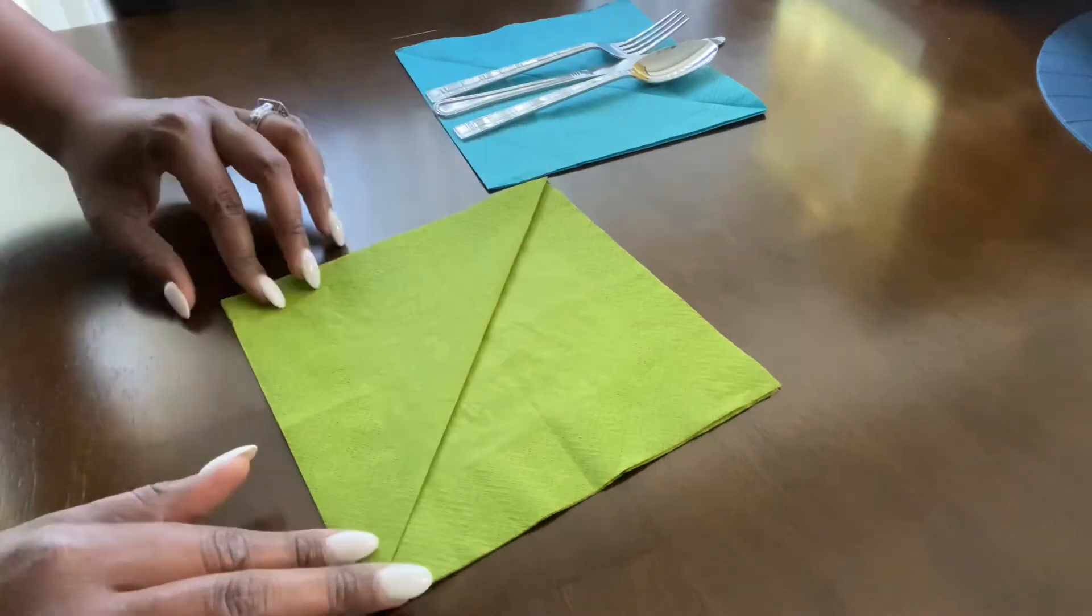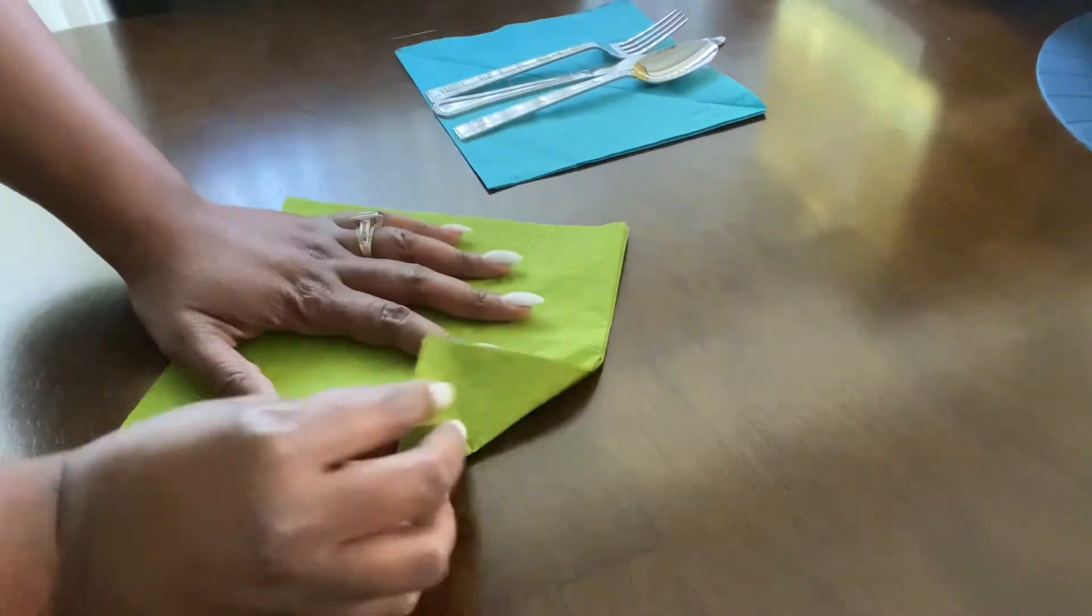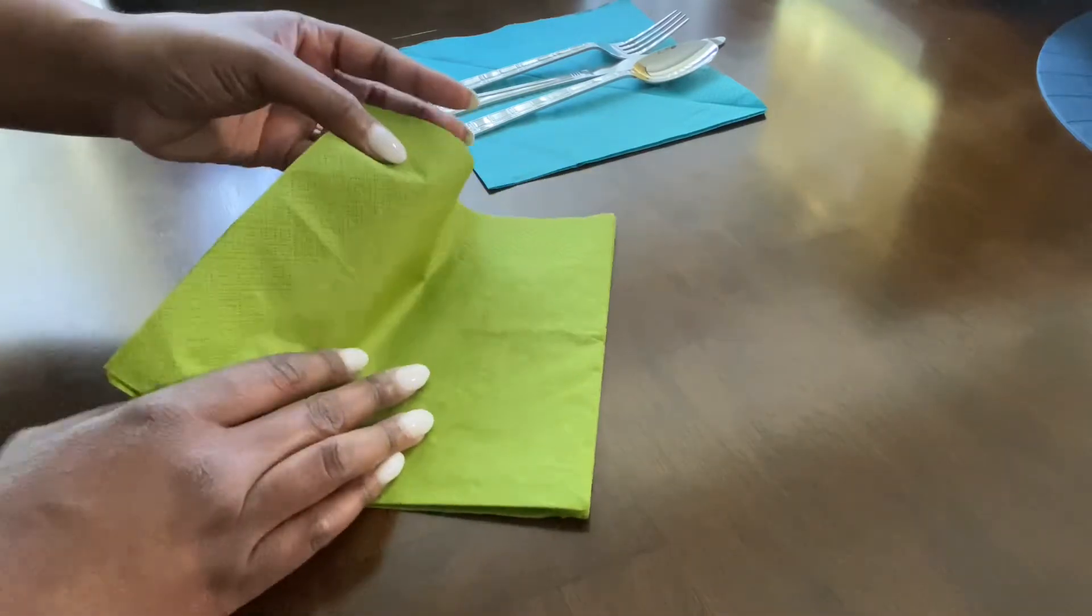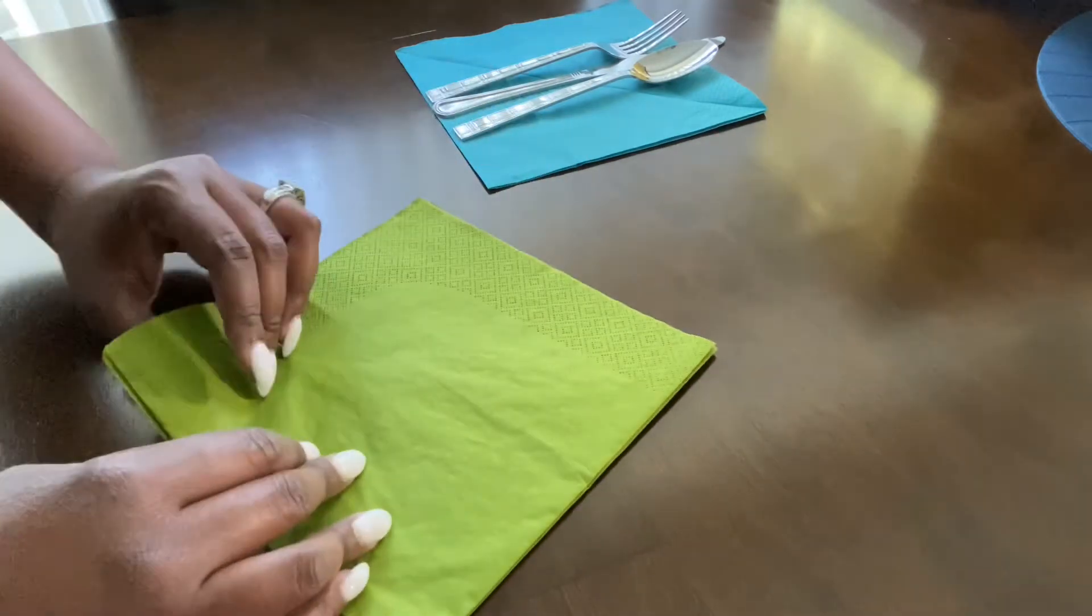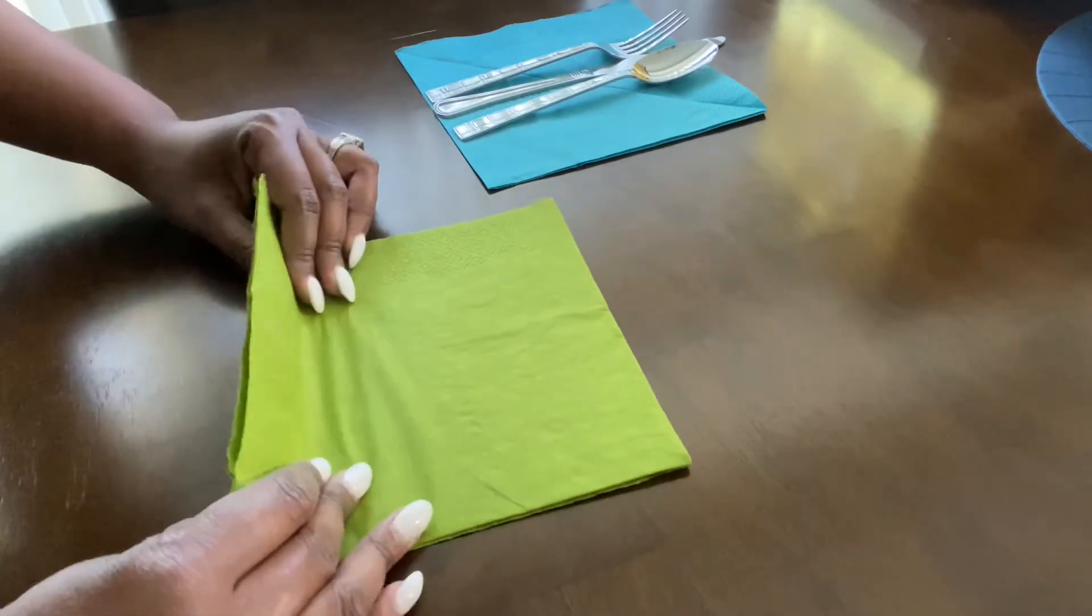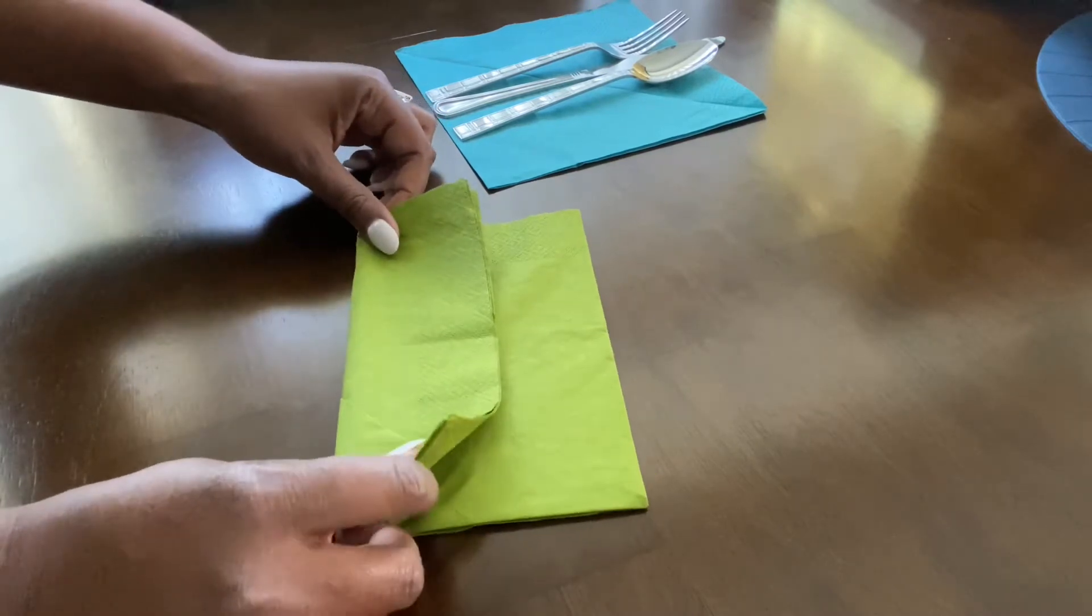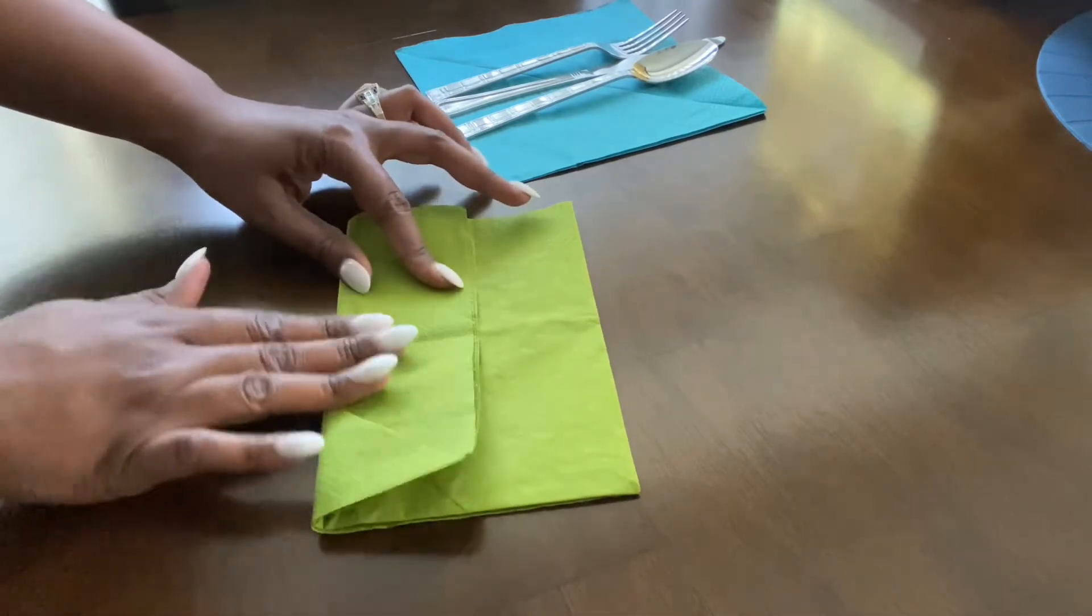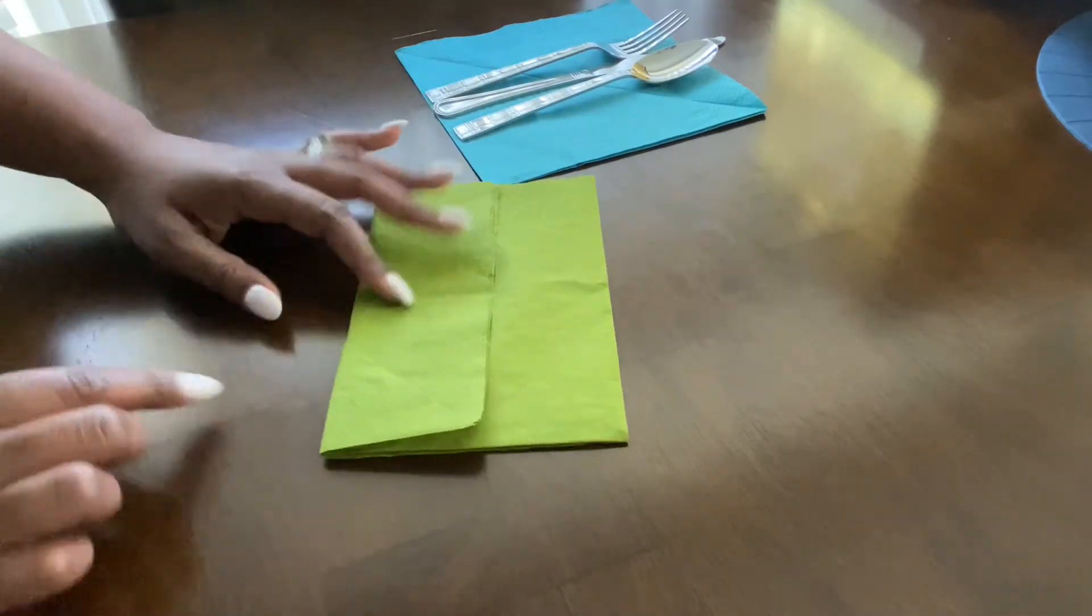We're going to flip that napkin and we're going to look for one of the sides that has the fold - it doesn't matter which side - but we're going to take that and then we're going to fold it halfway in like that. It's important to crease so that it'll look nice and neat.